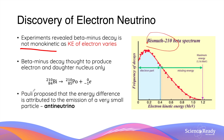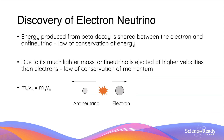Pauli proposed that the beta-minus decay does not produce only the electron and daughter nucleus. He proposed that the energy difference seen in the experiment is attributed to the emission of a very small particle known as the anti-neutrino. The energy produced from beta decay is shared between the electron and the anti-neutrino, conserving total energy. When the electron has less energy, the anti-neutrino has more, and vice versa.